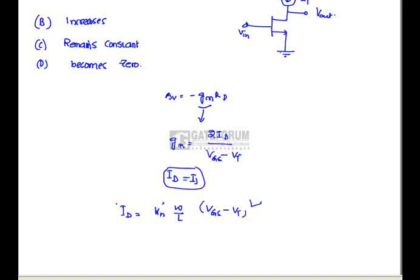See id is fixed but l is increasing. Means what about vgs minus vt. kn dash is the constant w is the constant but vgs minus vt is the overdrive voltage. It has to increase in order to maintain id as constant.